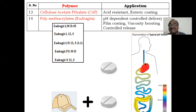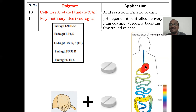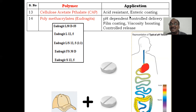CAP — cellulose acetate phthalate — is acid resistant. Think of it as a 'cap' on the tablet. It bypasses gastric acidity: the tablet will not dissolve in the stomach; it only releases in the intestine. This is called an acid-resistant enteric coating tablet. The CAP coating dissolves only at alkaline pH.